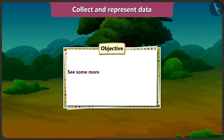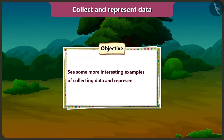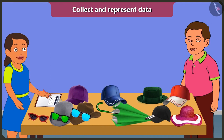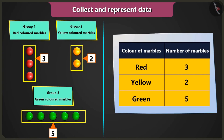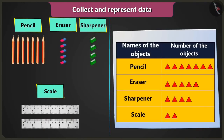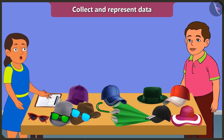Children, in this video we will see some more interesting examples of collecting data and representing them in a table. Hey Bubbly, what are you doing? You had taught me how to collect data and represent it in a table, so I am using that method to collect data on how many objects I have. You are doing great. But you did not use the second method that I taught you. Now I will collect data about some more objects and represent it in a different way — I will draw pictures of the objects.